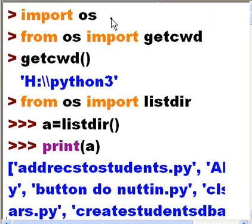The first thing that I do is I import OS, and then from OS I import getcwd. Let's get current working directory. Then I execute getcwd with open close parentheses, and I get my current working directory for Python, which is Python 3.